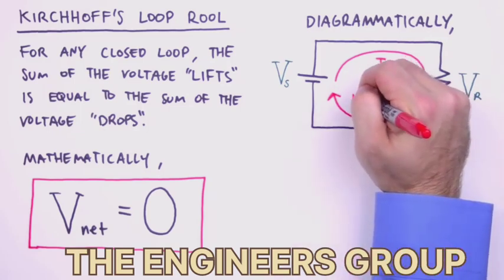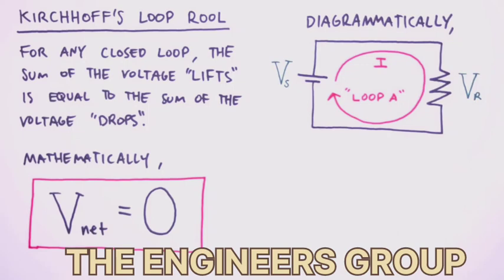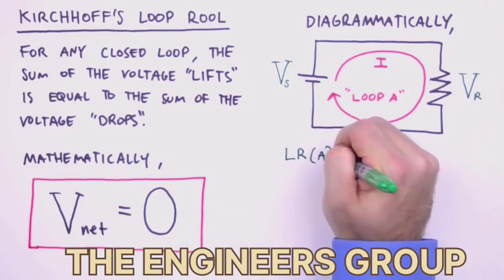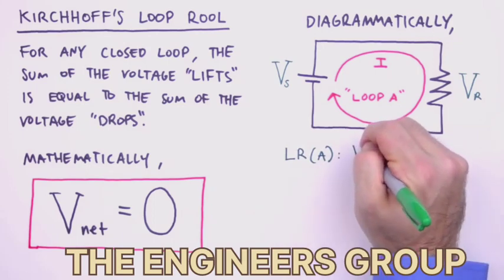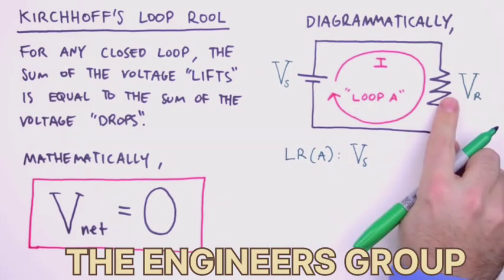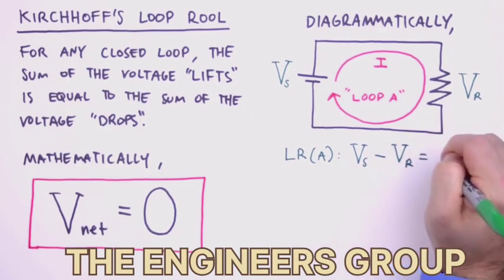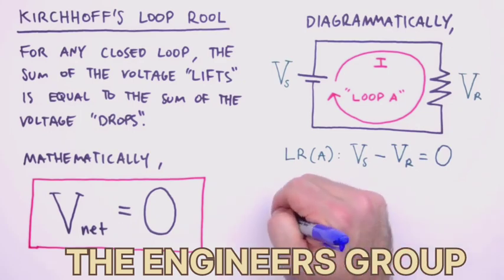Next, we'll label our circuit loop loop A. Note that for most circuits, currents and loops won't coincide and need to be explicitly labeled separately. Okay, to apply the loop rule to loop A, we'll travel clockwise around the loop summing voltages. Starting on the bottom left, we'll have positive V sub s, a voltage lift, and then moving around to the other side, we'll have negative V sub r, a voltage drop. We set that equal to zero, and that is how we apply the loop rule.